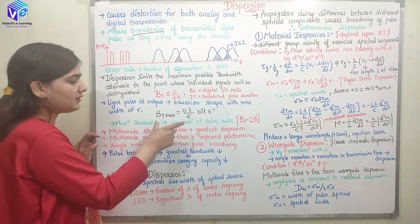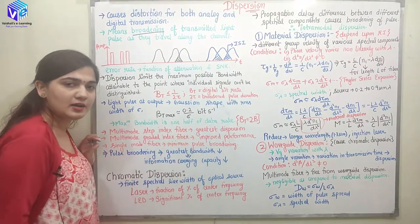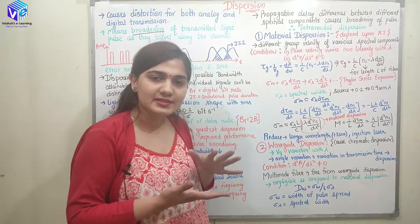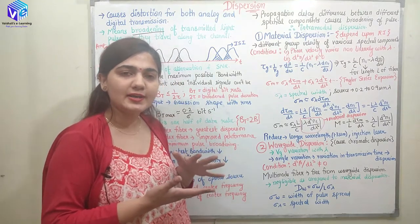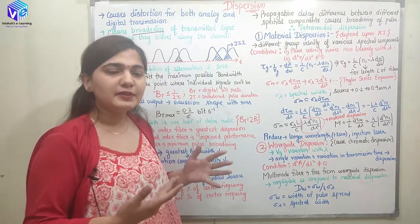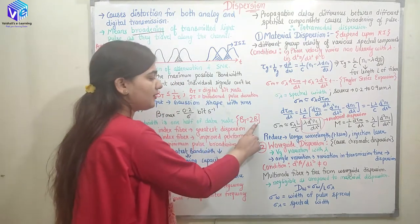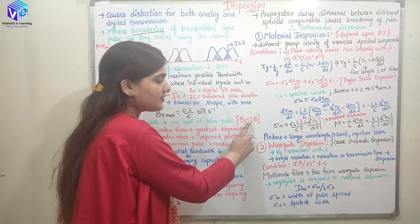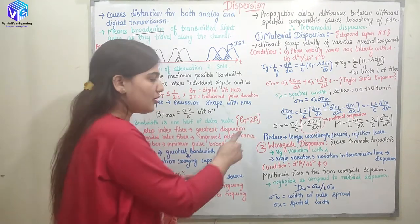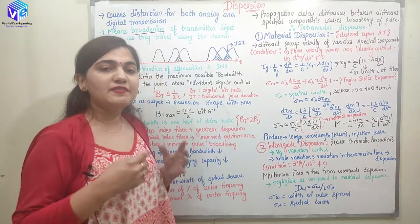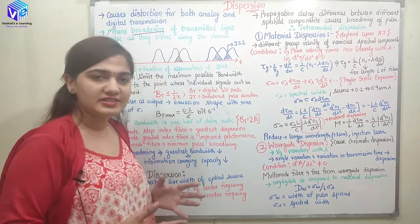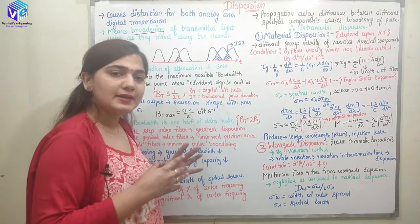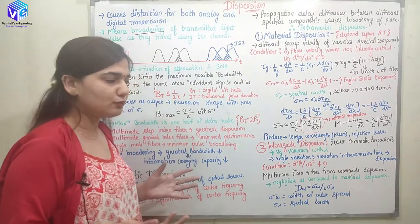Maximum bandwidth is one half of the data rate. If I have a lesser bit rate or data rate, the bandwidth is also going to reduce. Bandwidth would be bit rate upon 2, so bit rate equals twice into bandwidth — BT is equal to 2B. But if I have the RZ signal, then in that case the bandwidth would be directly equal to the bit rate.